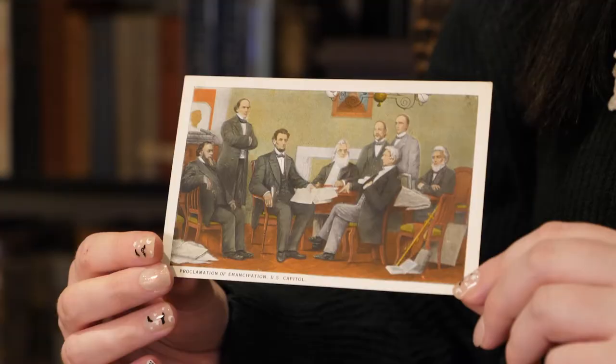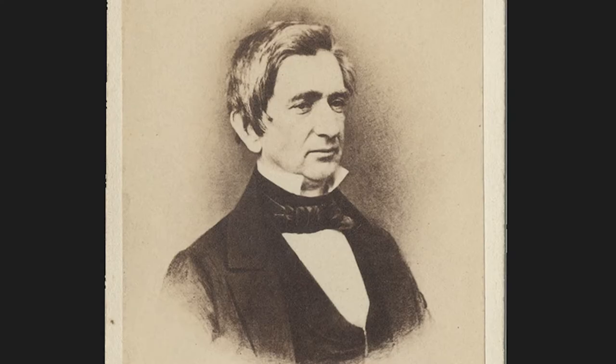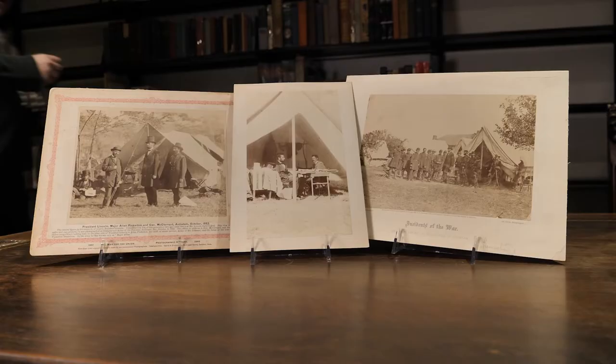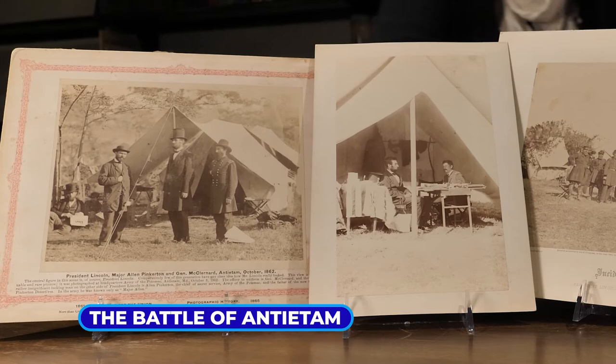In July of 1862, President Abraham Lincoln read a draft of his Emancipation Proclamation to his cabinet. After reading this, Secretary of State William Seward advised that Abraham Lincoln should wait until a clear Union victory so he would not sound desperate.